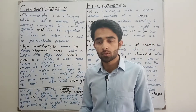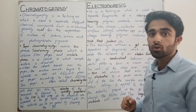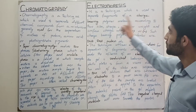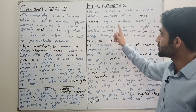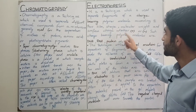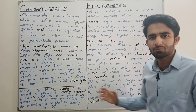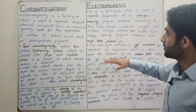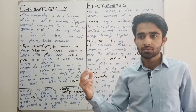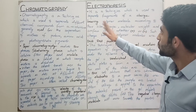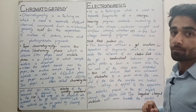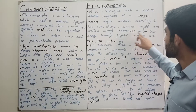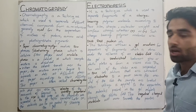Chromatography ke through hamari mixture, protein ka, amino acid ka, aur photosynthetic pigments ki, unko hum separate karte hain. Ab next jo hai woh hai electrophoresis. Electrophoresis ki statement ye hai ke it is a technique which is used to separate fragments of a charge-bearing polymer molecule according to their size, shape, polymer molecular weight, and surface charge whether positive or negative.